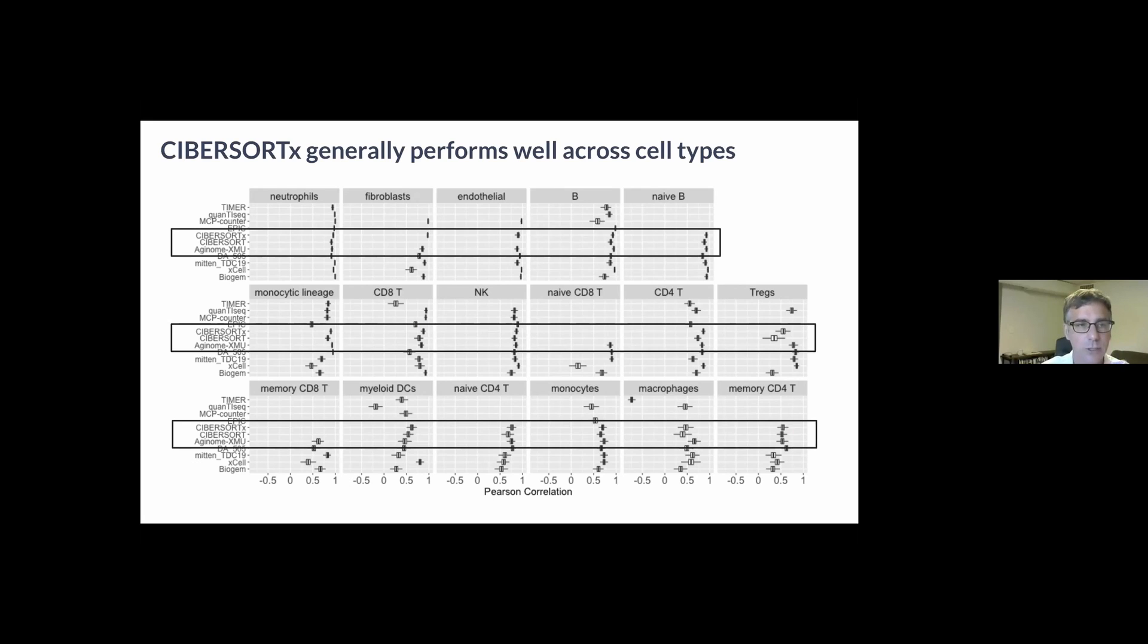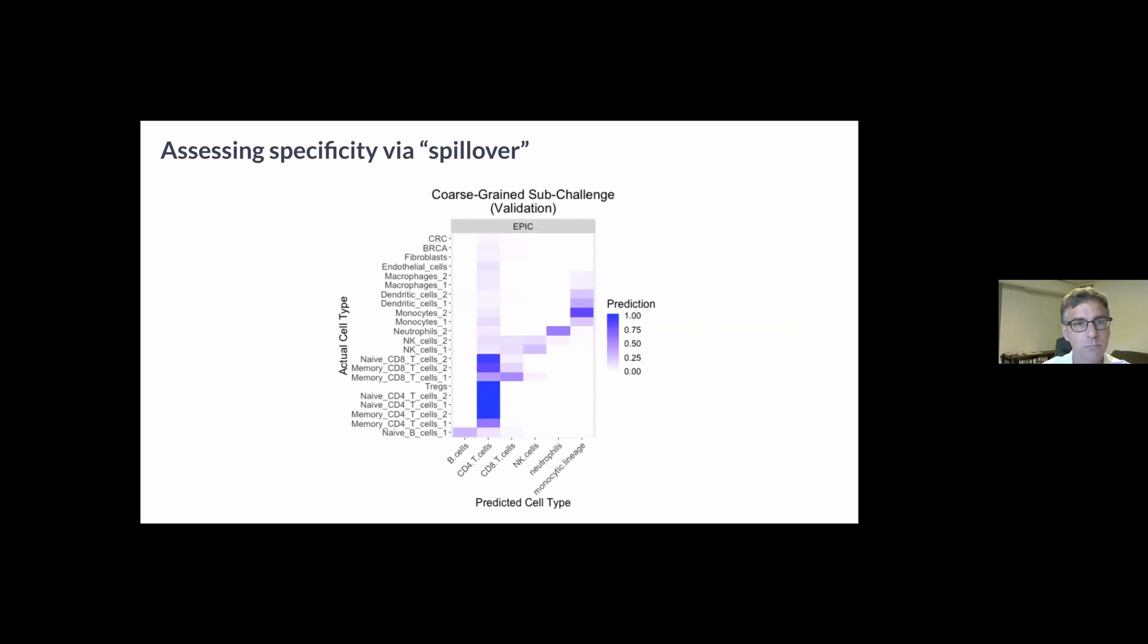That's memory CD4 T cells. Here I'm highlighting CIBERSORT, CIBERSORTx, and Axonome XMU. From this you can see that with the possible exception of regulatory T cells, all these three methods do well relative to other methods across all the cell types, so the performance is uniformly strong across these different cell types.